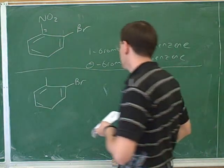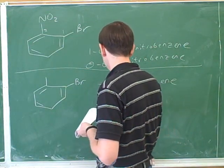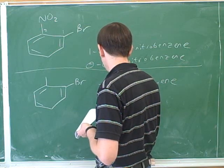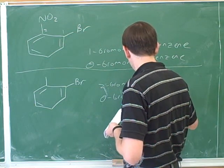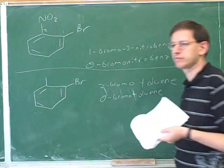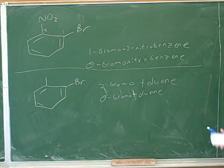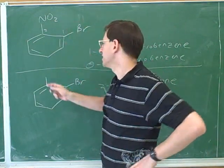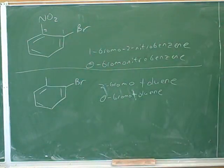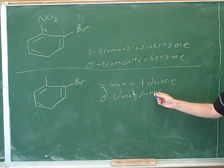So the name here would be 2-bromotoluene or O-bromotoluene. So it's important to compare this example and this example to see how they're different from each other. The difference is that in this case, neither substituent had a common name. And in this case, one of the substituents on benzene does have a common name. If there's no common names, you just use benzene as the suffix. But if there is a common name, then it gets the suffix.